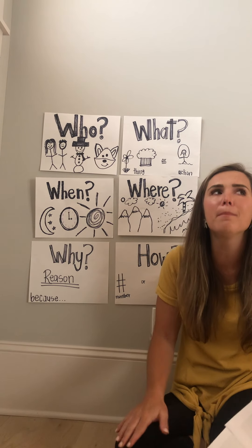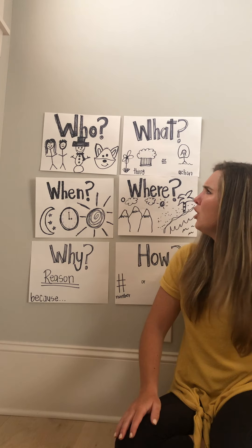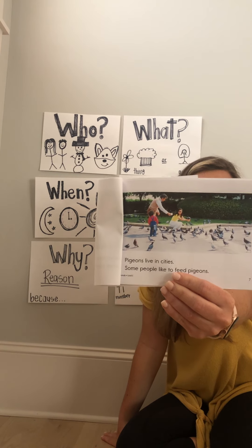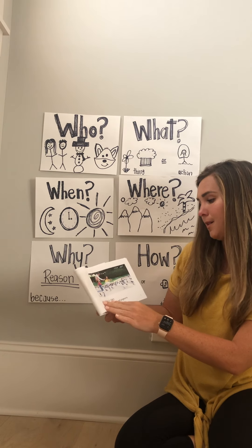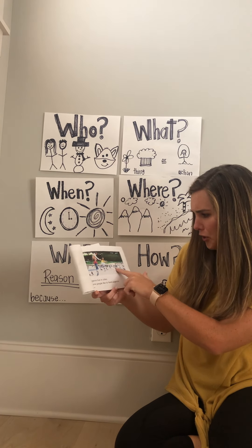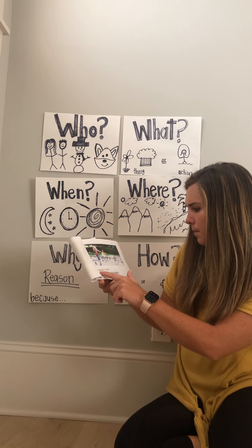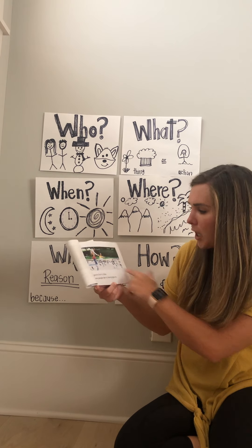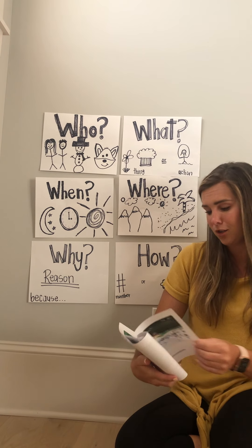My next question is: I remember this book telling me about pigeons, but I want to know — what is a pigeon? Looking at this page, you can look in the picture. I see a bunch of little birds, so I'm thinking pigeons must be birds. That's the only animal I see. The words say: pigeons live in cities, some people like to feed pigeons. I see people right here feeding the birds. So a pigeon must be a bird. If you said bird, kiss your brain!